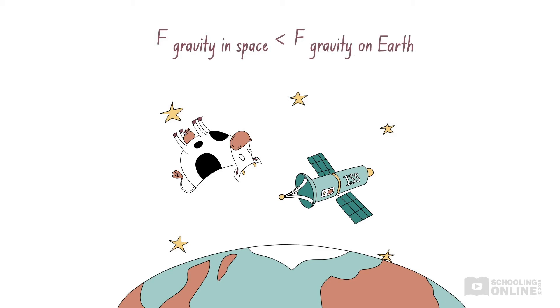This means that the cow weighs less than it does on the Earth's surface and the acceleration due to gravity is less than 9.81 metres per second squared. We will understand why this is the case as we look at the equation for gravitational force.